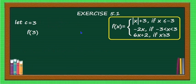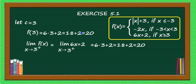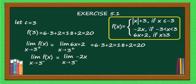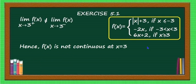For Case 4, c = 3: f(3) = 6(3) + 2 = 18 + 2 = 20. Right-hand limit as x → 3⁺ of 6x + 2 = 6(3) + 2 = 20. Left-hand limit as x → 3⁻ of -2x = -2(3) = -6. The left-hand limit (-6) is not equal to the right-hand limit (20). Therefore, f(x) is not continuous at x = 3.